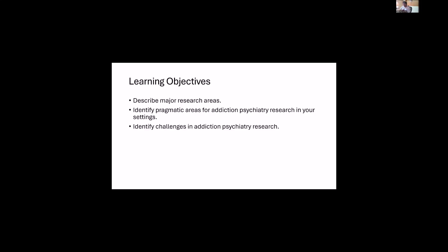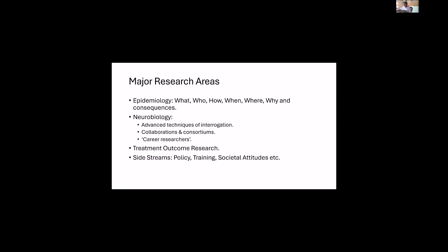The objectives are to describe major research areas in a broad framework, so that one can identify what they are passionate about. We will also identify pragmatic areas based on the setting one is in, because that is more important. There are so many questions to be answered, but one must consider what can be answered given the limitations of their setting. We'll also identify the challenges when taking forward a research project in addiction psychiatry.